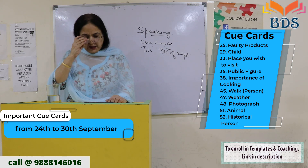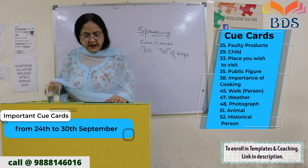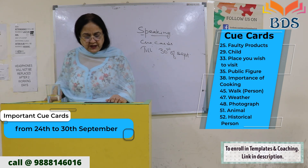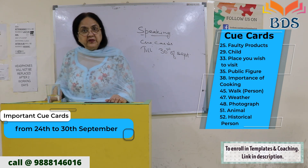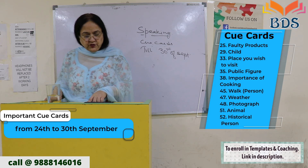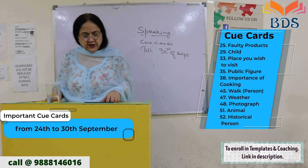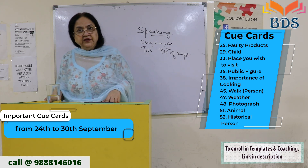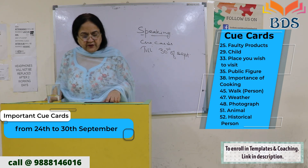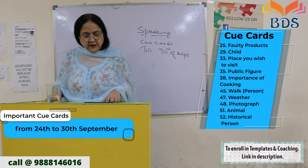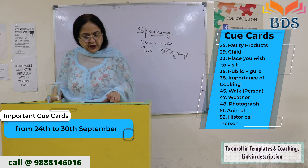Second, card number 29 — child. Card number 33 — a place you wish to visit. Card number 35 — public figure. Card number 38 — importance of cooking.